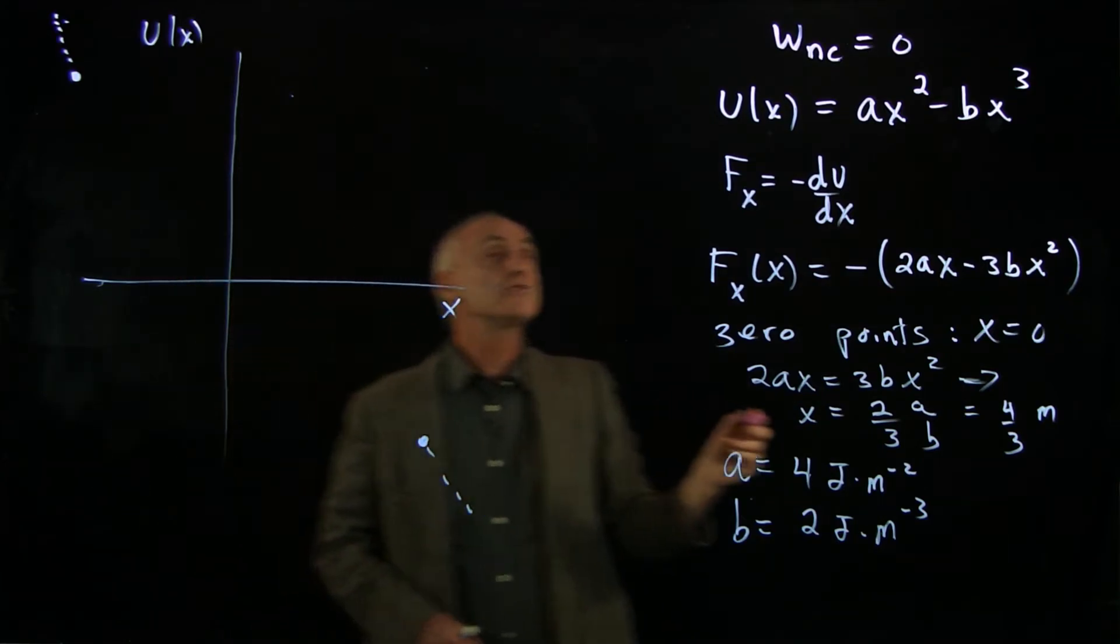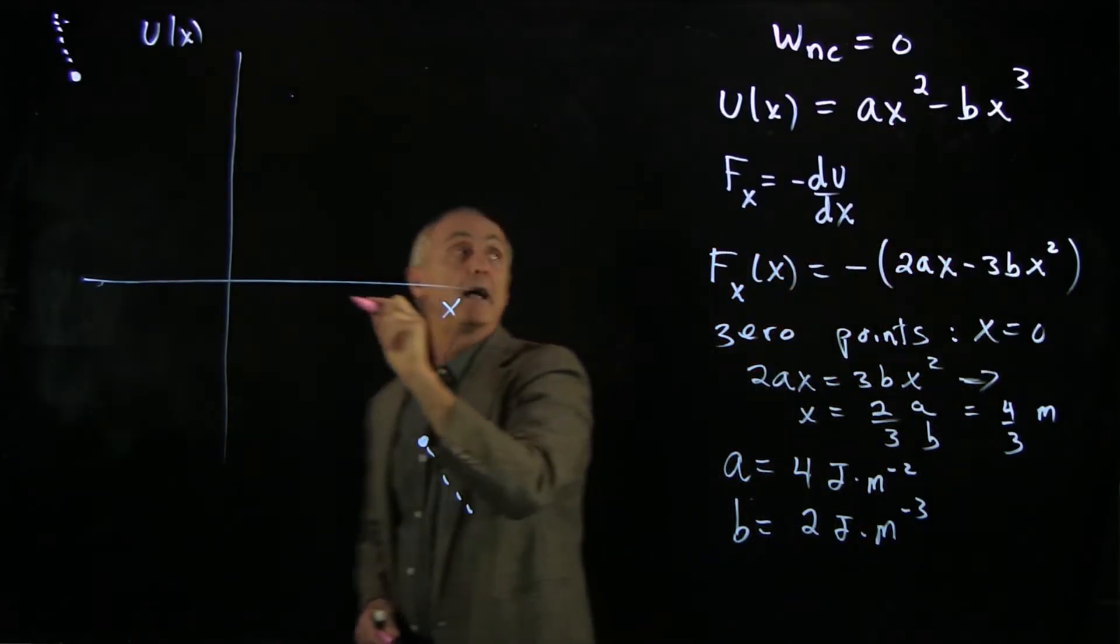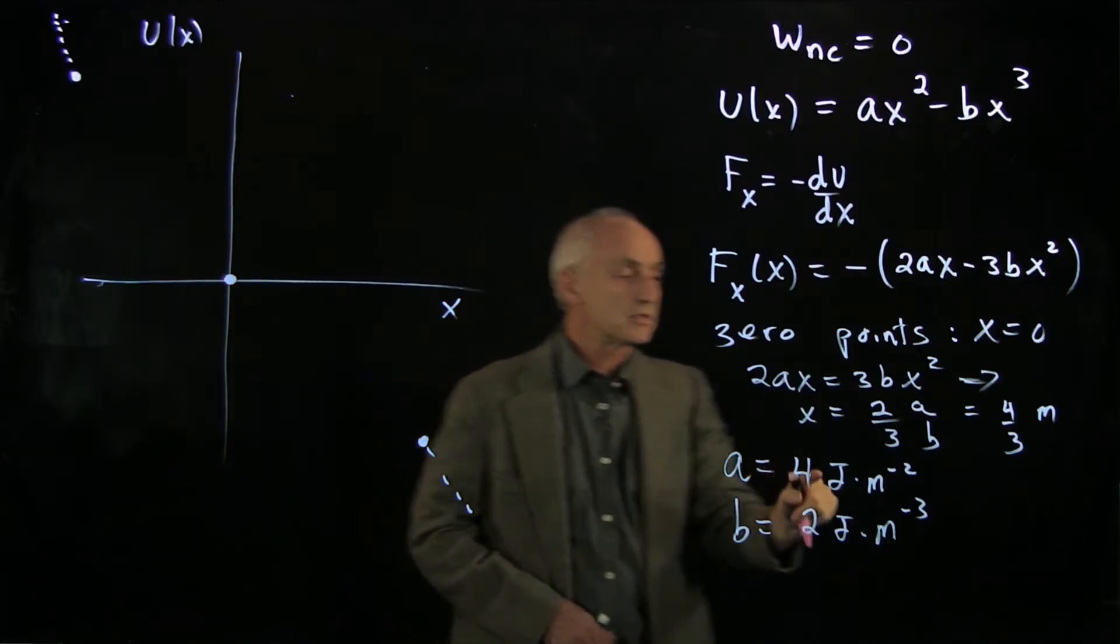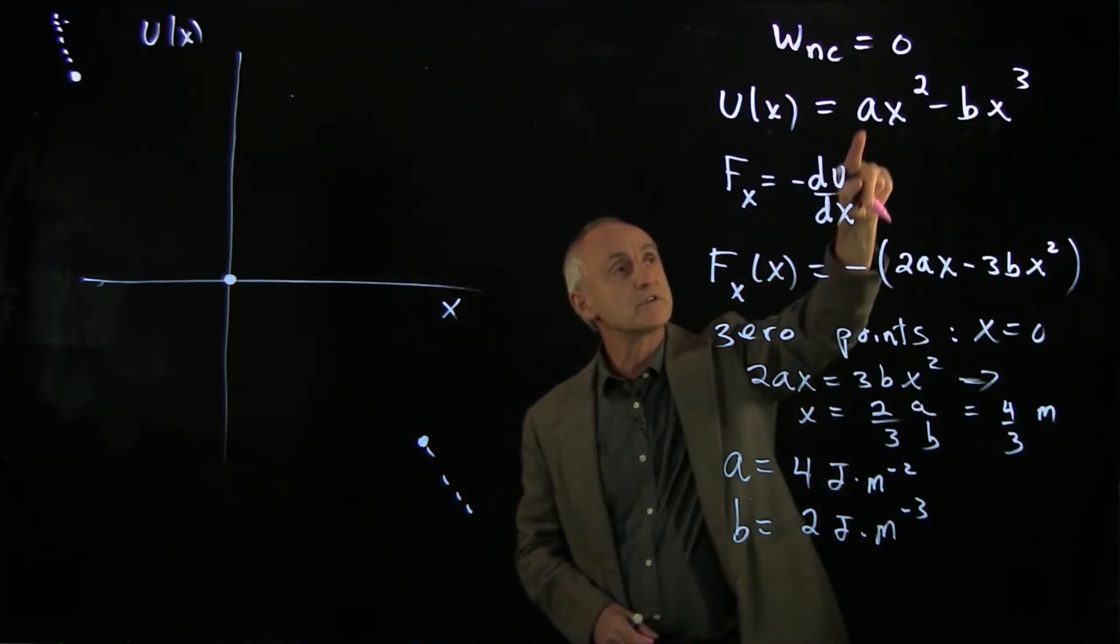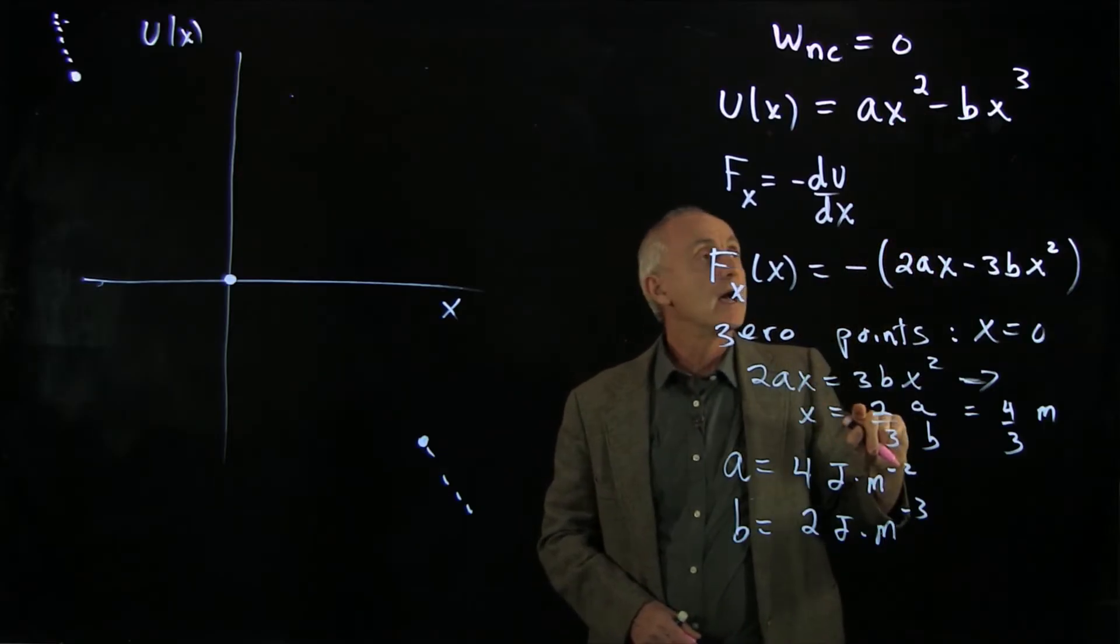Where are the zeros of the potential function? There's obviously one at x = 0. With these values, it's not 100% obvious immediately, but if you look at 4x² - 2bx³...